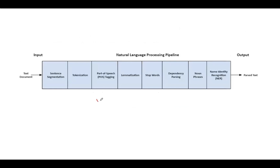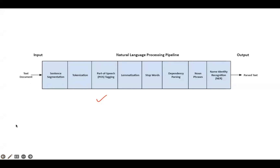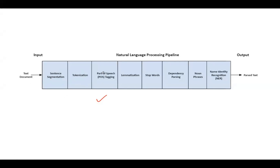In our pipeline, here you can see the most important steps that should be performed whenever input text is given: first, sentence segmentation; then tokenization; parts-of-speech tagging; lemmatization; stop word removal; dependency parsing; noun phrases; and then named entity recognition. After performing all these steps, you will get an output which is a parsed text. Co-reference resolution is an optional step — up through NER, you need to perform all the steps.